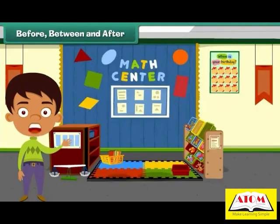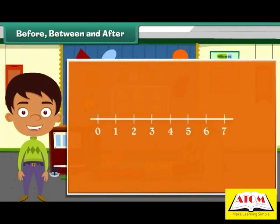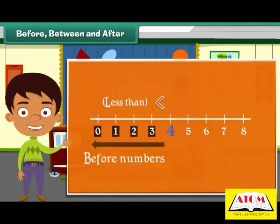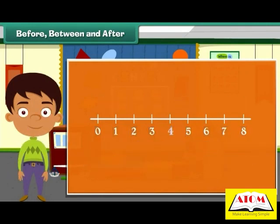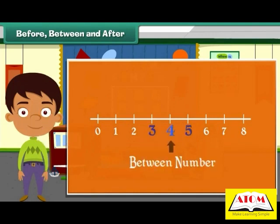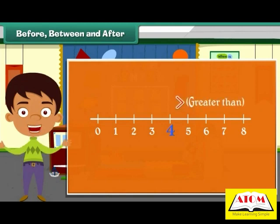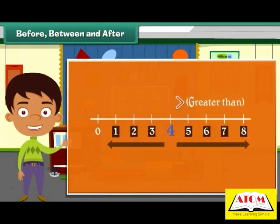Before, between, and after. Numbers that are less than a given number appear before it. Numbers that are greater than a given number appear after it. What can we say about a number that falls between two numbers? The numbers to the right are greater than the given number and the numbers to the left are smaller than it.